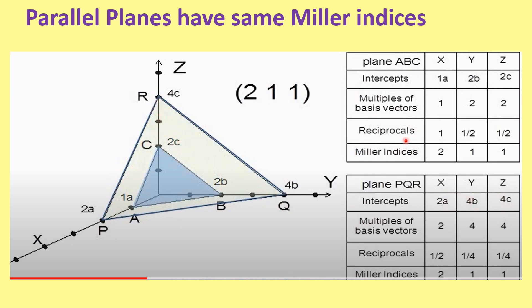If we take the Miller indices, take the reciprocal: 1, 1/2, 1/2. If we make it integer: 2, 1, 1. Similarly, in case of this: 1/2, 1/4, 1/4, it will make 2, 1, 1. So a set of parallel planes will have the same Miller indices.